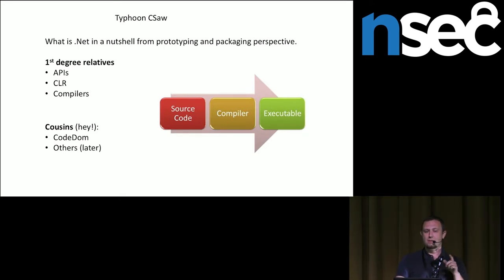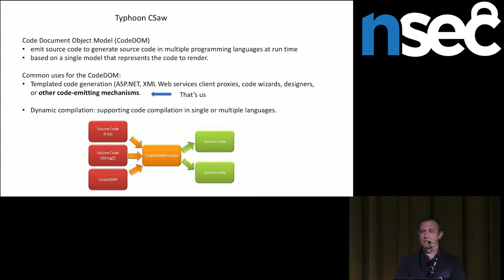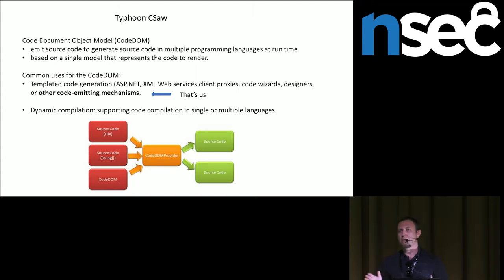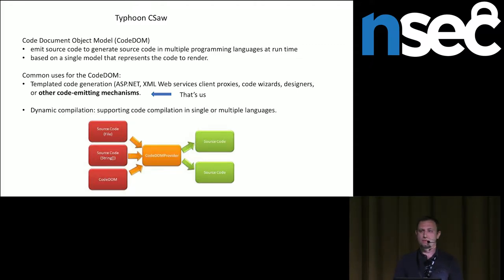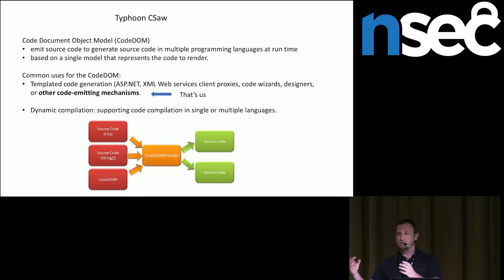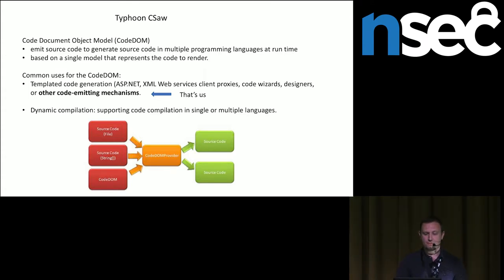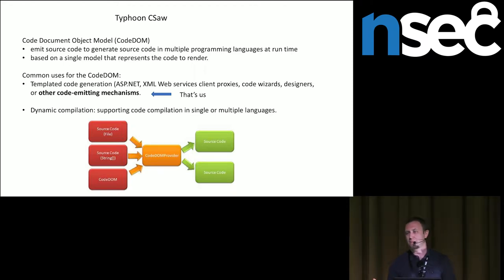We want to focus on things that build things for us. CodeDOM essentially solves the issue of dynamic compilation and creation of code — generation of code from code. You see this from ASP.NET, XML, and UI code wizards in Visual Studio. It's a solved problem: you want to create your code from the code you have. You take maybe a string of code and turn it into an object — you emit the code. The good thing about CodeDOM is you can do dynamic compilation; no longer do you need to invoke CSC.exe, because it may be blacklisted or logged from the command shell.